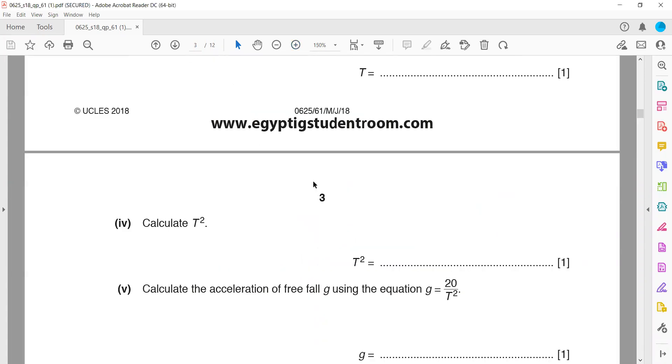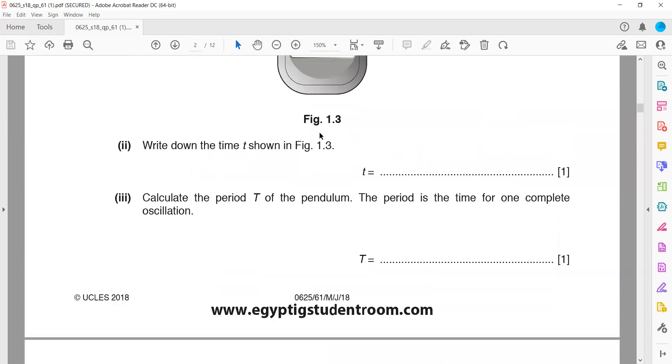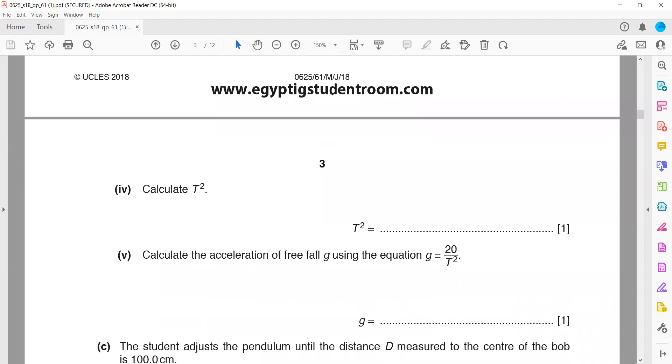Calculate T². We have the value for T which is 1.406, so 1.406 squared equals 1.99. When we square that, we get 1.99.